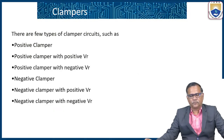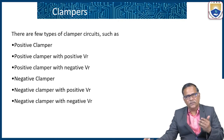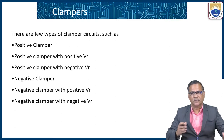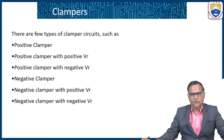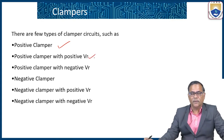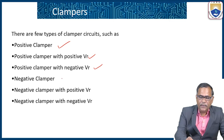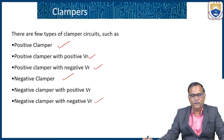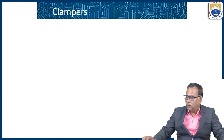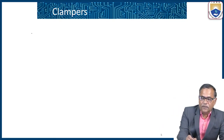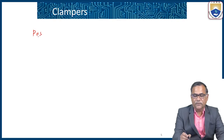There are a few types of clamper circuits: positive clamper, positive clamper with positive Vr, positive clamper with negative Vr, negative clamper, negative clamper with positive Vr, and negative clamper with negative Vr. Now let us examine the positive clamping circuits.